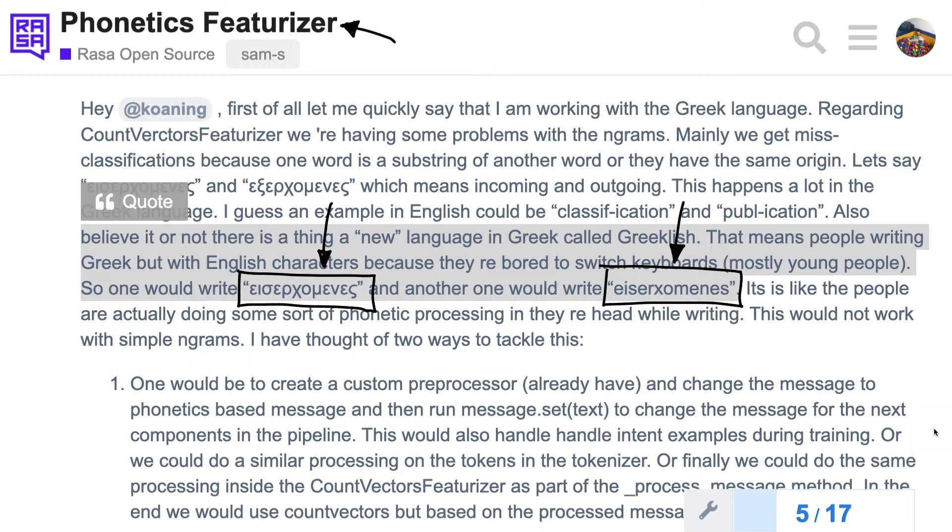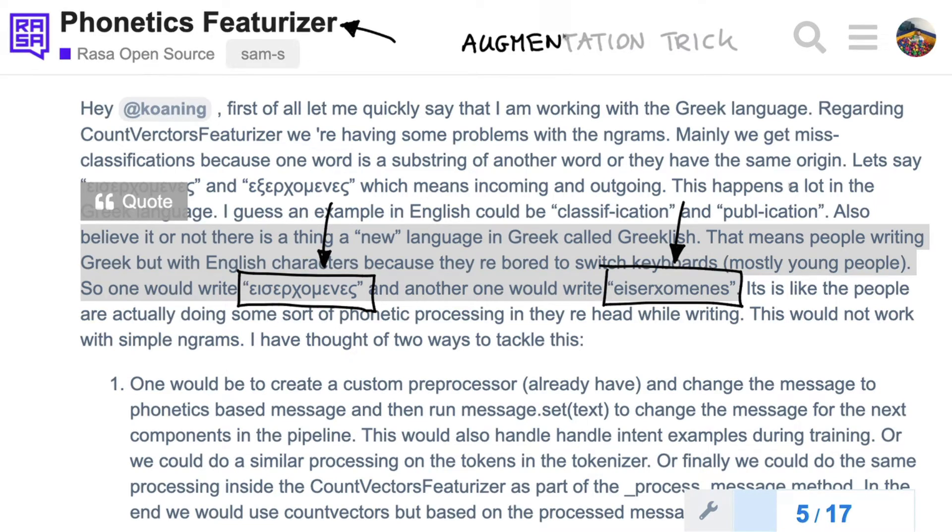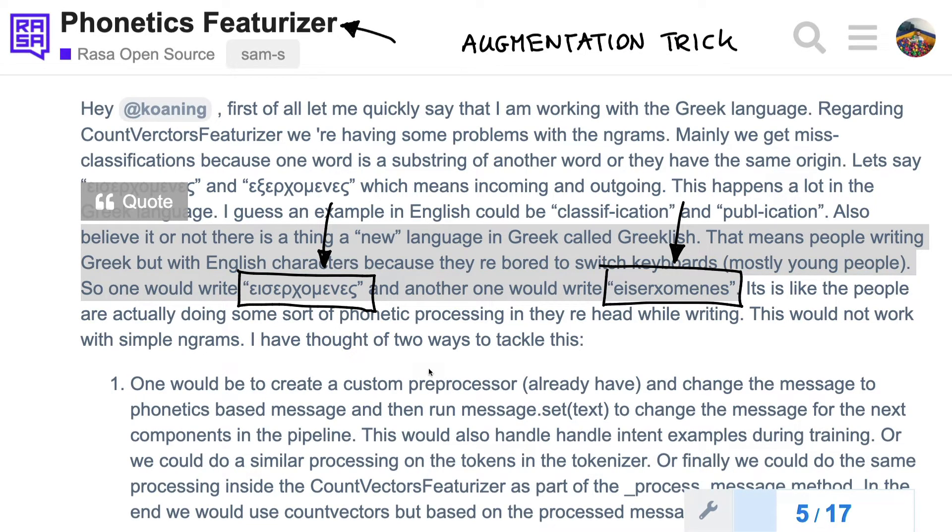I started thinking about the problem a bit, and I came to the conclusion that there might be another way of solving this problem. Maybe the issue isn't the lack of a featurizer. Maybe what we've got to do is an augmentation trick. Maybe we have to do something such that the system that is learning from this data treats both of these tokens as equal.